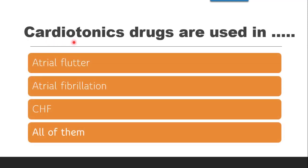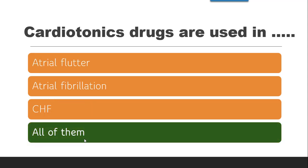The next question is: Cardiotonic drugs are used in which conditions? Whether atrial flutter — a condition involving heart rhythm disorders where the atria beat too quickly — or atrial fibrillation, which involves irregular and rapid heart rate, or congestive heart failure. Cardiotonic drugs can work on all these conditions. So the correct answer is all of them.